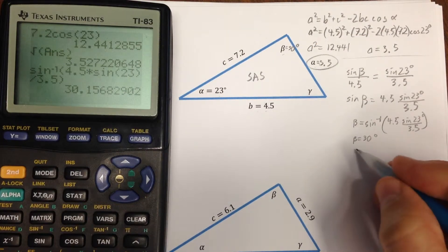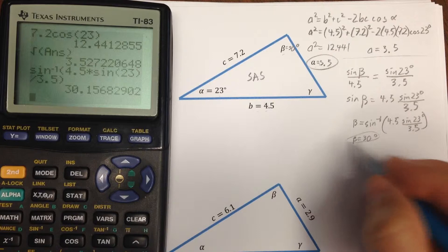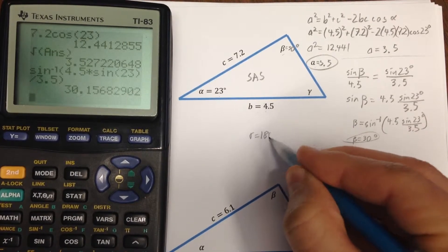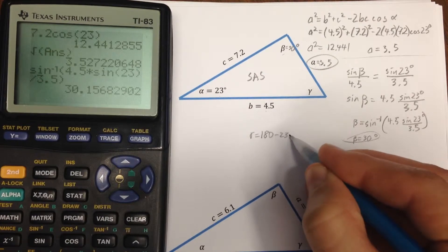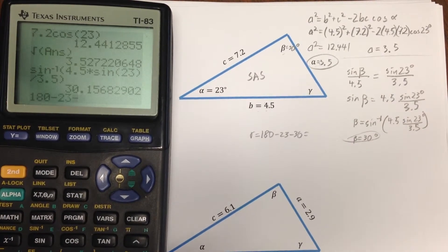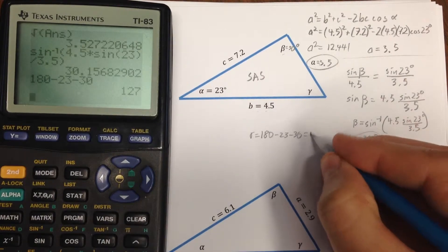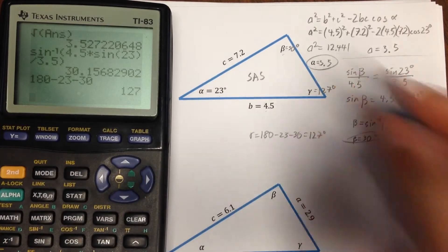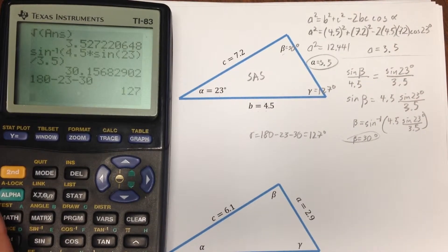How am I going to get gamma? Well, my preferred method to get gamma is 180 degrees minus 23 minus 30. So, that's 127 degrees and the triangle is solved.